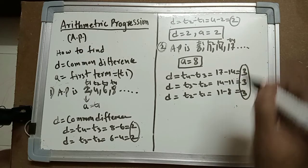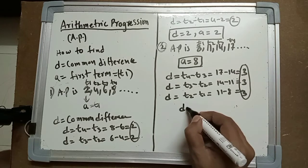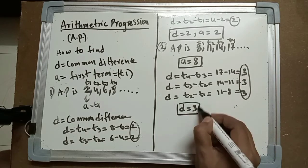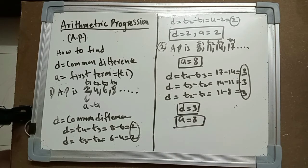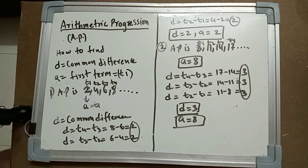So the common difference d equals 3 and the first term a equals 8. I hope you have understood this. If you have any problem, write it down in the comments. We will wrap up here for today and meet in the next video. Thank you, good day.